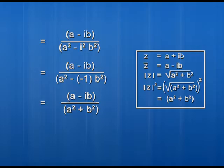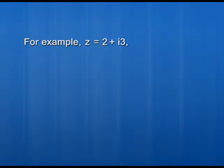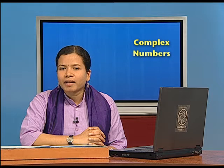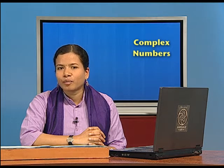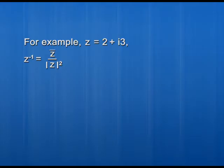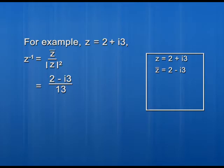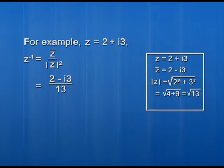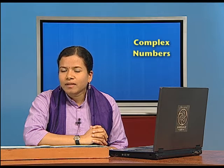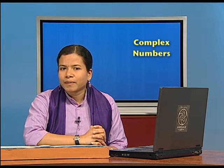So the formula is: z inverse equals conjugate of z divided by |z| squared. For example, if z equals 2 plus i3, then the conjugate of z is 2 minus i3. The modulus of z is the square root of 4 plus 9, which is the square root of 13, so |z| squared is 13. Therefore, z inverse equals (2 minus i3) divided by 13.